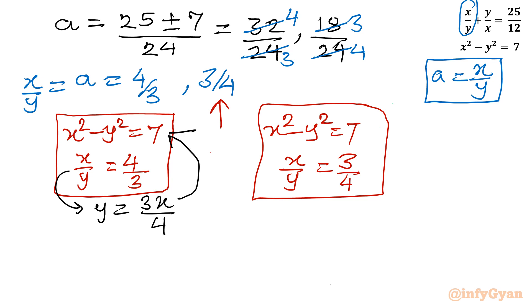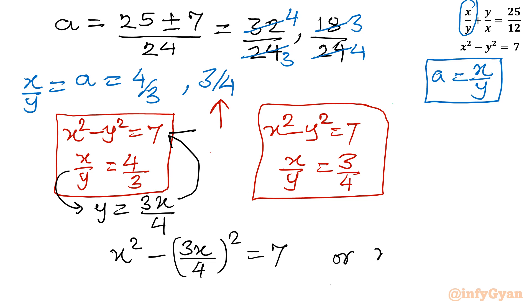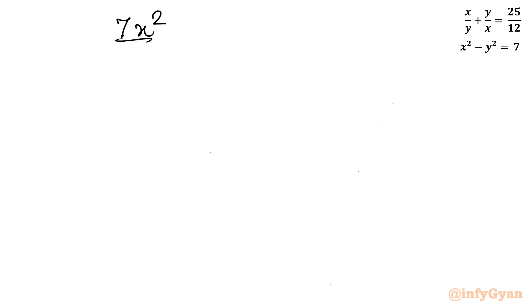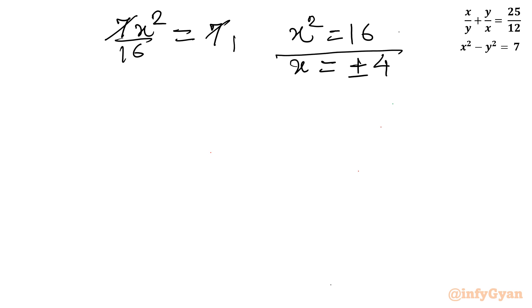Substituting y equals 3x over 4 into the first equation: x squared minus (3x over 4) squared equals 7, giving x squared minus 9x squared over 16 equals 7. Taking LCM: 16x squared minus 9x squared over 16, that is 7x squared over 16, equals 7. Cancelling the 7s gives x squared equals 16.